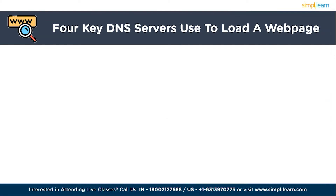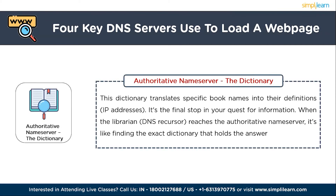The authoritative name server is like a dictionary on a rack of books — it translates specific domain names into their IP addresses. It's the final stop in the quest for information. When the DNS recursor reaches the authoritative name server, it's like finding the exact dictionary that holds the answer. If the authoritative name server has the requested information, it shares the IP address with the DNS recursor, who then passes it on to you. These four DNS servers work together to help you find and access websites on the internet.